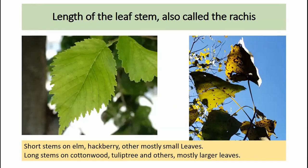The length of the leaf stem is another characteristic found in many keys. Short leaf stems are typical of elm, hackberry, and some white oaks with relatively smaller leaves. Longer leaf stems are found on cottonwood, tulip trees, and sweetgum, which often have relatively large leaves. Leaf stem length is a pretty good identification characteristic used in many keys.